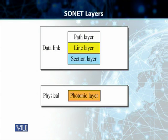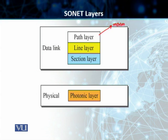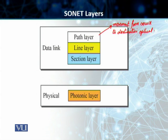On the data link level, we have three layers. The first one is called the path layer, and the path layer is responsible for the movement of a signal from its source to the destination. The path connection connects the end-to-end devices — the MUXs that we have in our SONET link. The path layer is responsible for the movement of a signal from the source to the ultimate destination optical devices.